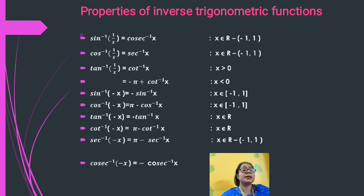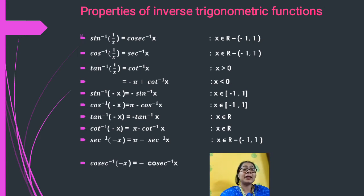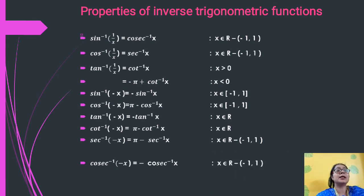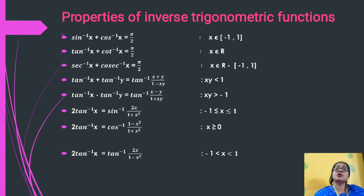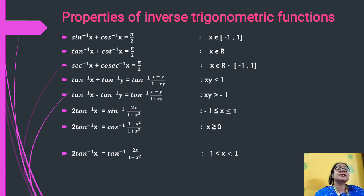To remember: sin⁻¹, cosec⁻¹, and tan⁻¹ — a negative argument brings a minus sign to the front. For cos⁻¹, sec⁻¹, and cot⁻¹, the result is π minus that inverse. Now the next set of properties: sin⁻¹(x) + cos⁻¹(x) = π/2, where x belongs to [−1, 1]. Tan⁻¹(x) + cot⁻¹(x) = π/2, where x belongs to all real numbers. Sec⁻¹(x) + cosec⁻¹(x) = π/2, where x belongs to real numbers except (−1, +1).